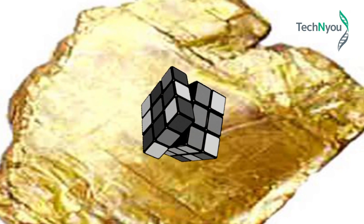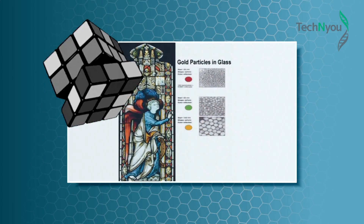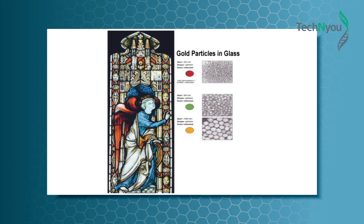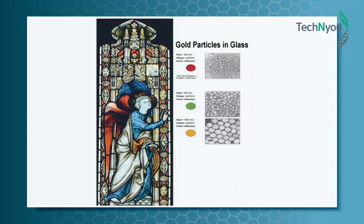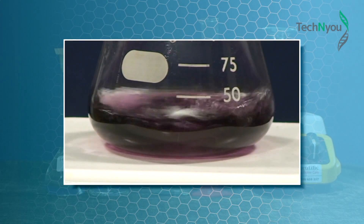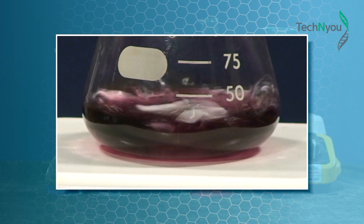Nanoparticles often exhibit different characteristics from the bulk form of the element because of their size and greater surface area to volume ratio. Color changes at the nanoscale directly relate to the size of the nanoparticle, a characteristic that is particularly evident in the synthesis of gold nanoparticles.